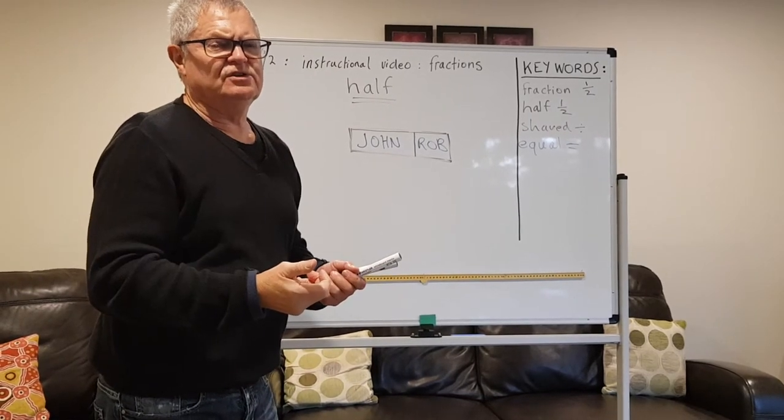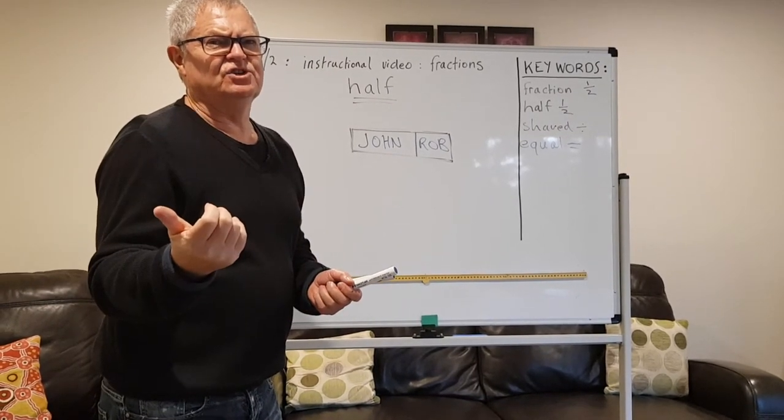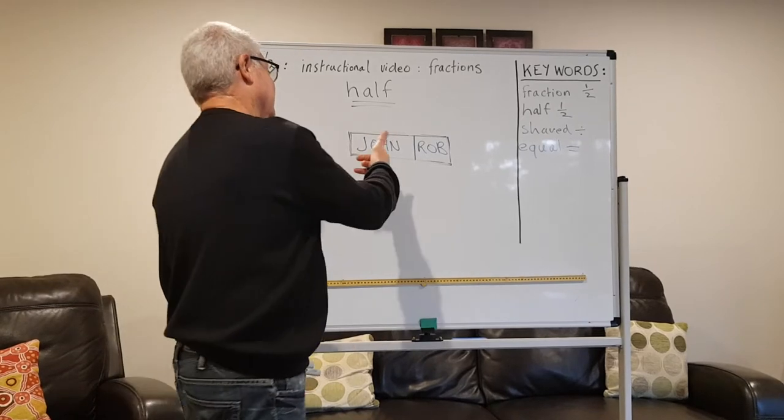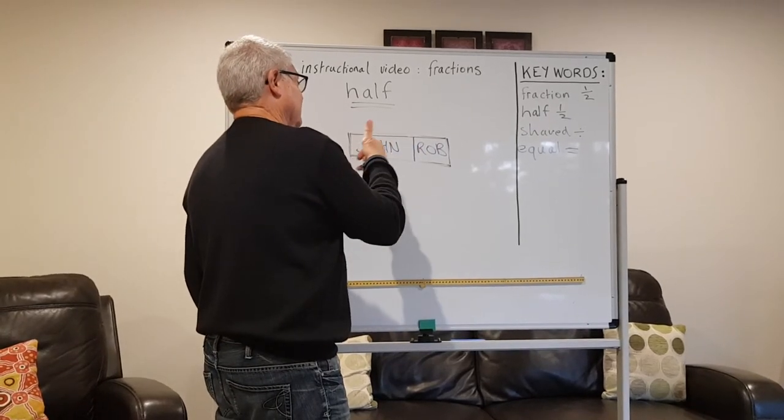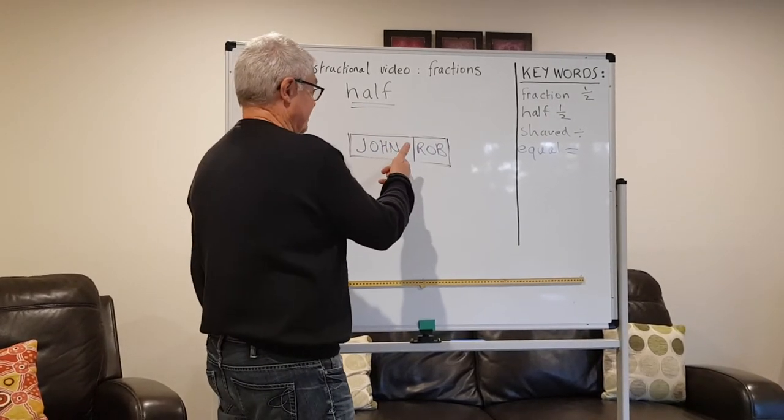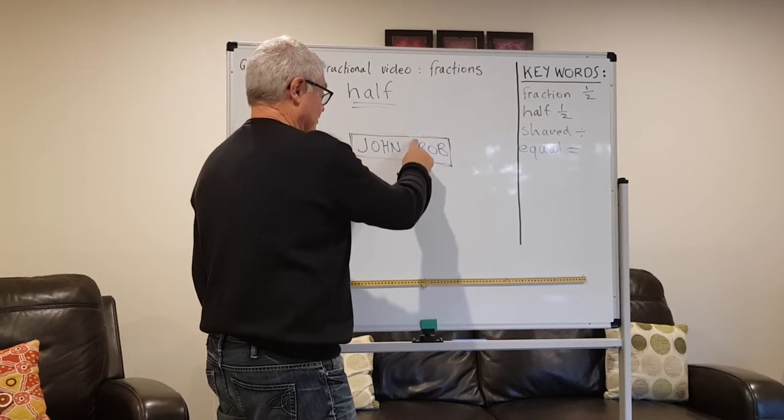And now we have a rule in our family. Whoever breaks first, the other person gets to choose. So, next time John does that, I'll just say, Well, I'm having that bit. Because that bit is way bigger. It's not half.